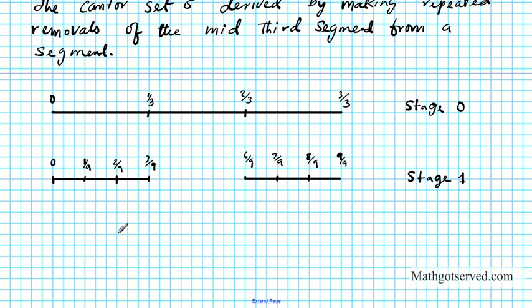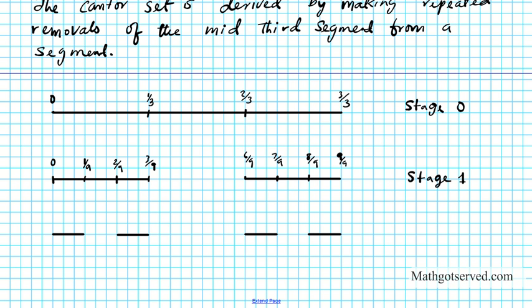So if I take that out, I'm going to be left with four segments spaced evenly. This is stage 2 of the counter set.